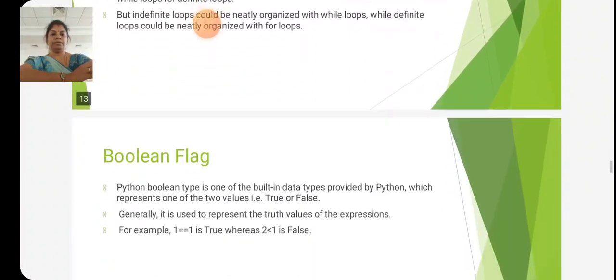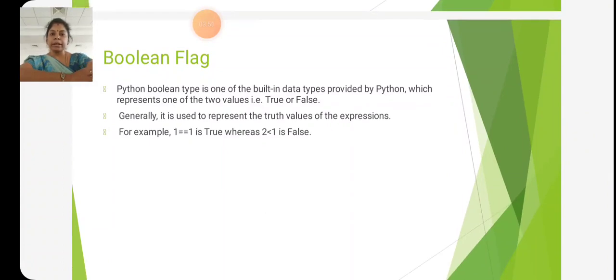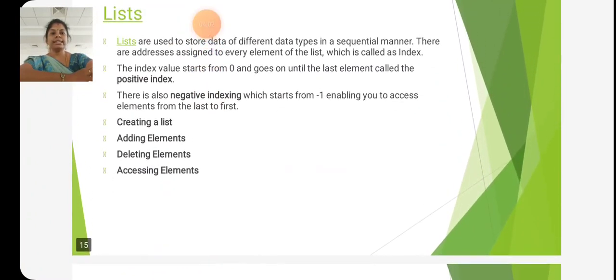Boolean flag: Python Boolean type is one of the built-in data types provided by Python which represents one of two values, that is True or False. Next is lists. Lists are used to store data of different data types in a sequential manner.